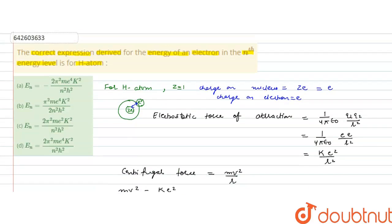Checking the options: Option A, En = −2π²me⁴k²/n²h², is correct. Option B is incorrect because it has 2 in the denominator instead of n². Option C is incorrect because it shows e to the power of 2 instead of e⁴. Option D is incorrect due to absence of the negative sign — the total energy must always be negative. Therefore, the correct answer is option A.